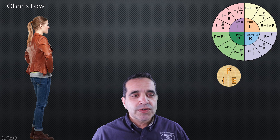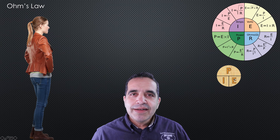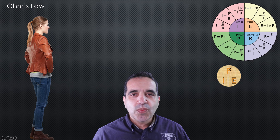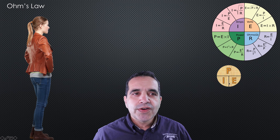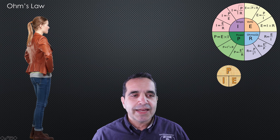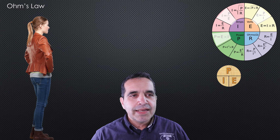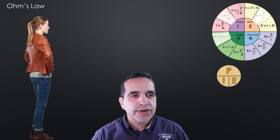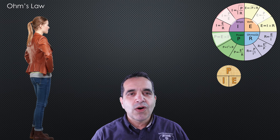We can see P is equal to I times E, E is equal to P over I, and I is equal to P over E. If it's horizontal on the wheel it's multiplication; if it's vertical it's division. So I times E equals P gives us three formulas: P equals I times E, I equals P over E, and E equals P over I. The small Ohm's law wheel gives us another three: E equals I times R, I equals E over R, and R equals E over I.